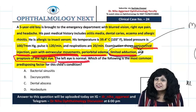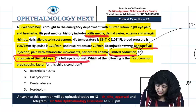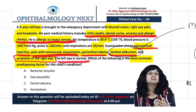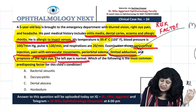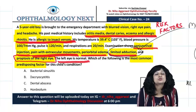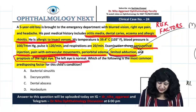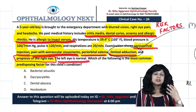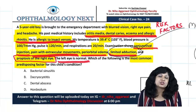Now do we have the risk factors here? They mention so many risk factors: otitis media, dental caries, eczema, and allergic rhinitis. He is even allergic to insect venom. So all these are actually risk factors. This five-year-old boy is also showing systemic features - he has fever, hypotension, and high pulse rate - all of which confirm that there is inflammation as well as infection.